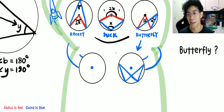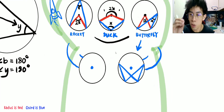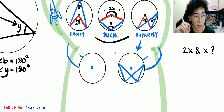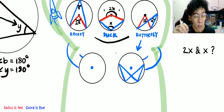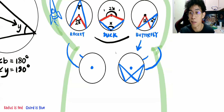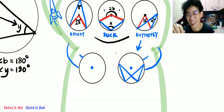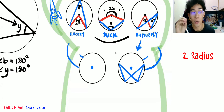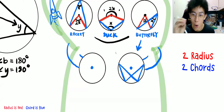Does this shape have the 2x and x relationship? For those who say yes — now listen. You must make sure you have two radius and two chords. In order to apply your double-single, your 2x and x, you must have two radius and two chords. This is the most important point.